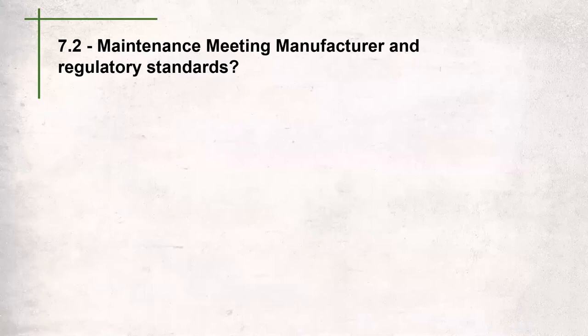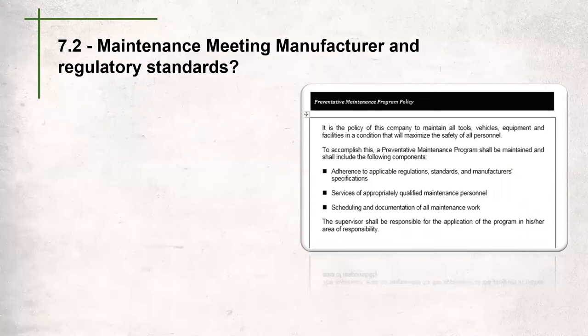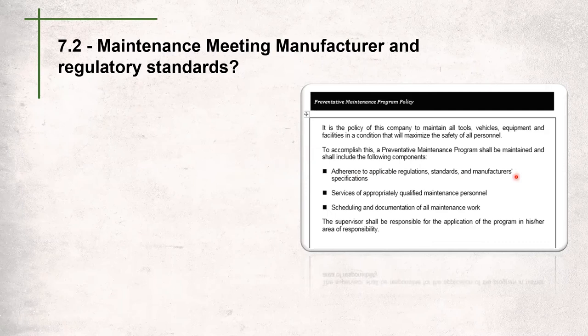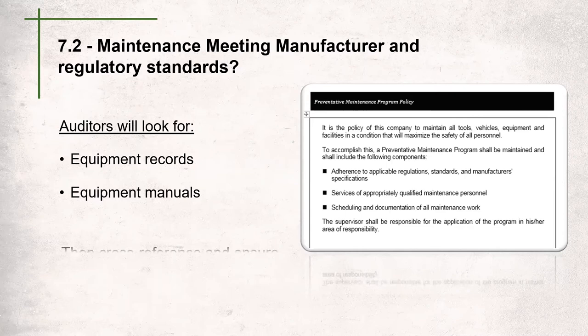Question 7.2 asks: is the maintenance meeting manufacturer and regulatory standards? Auditors will compare your company policy to equipment records and manuals to confirm that recommended practices are taking place. In this example, the company adheres to applicable regulation standards as well as manufacturer specifications. The auditor will make sure this policy statement is in line with what's actually happening. They've also noted that services are performed by appropriately qualified maintenance personnel — not allowing unqualified people to maintain equipment.